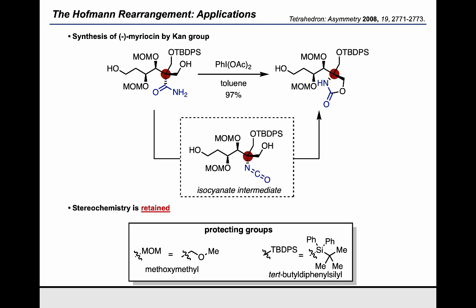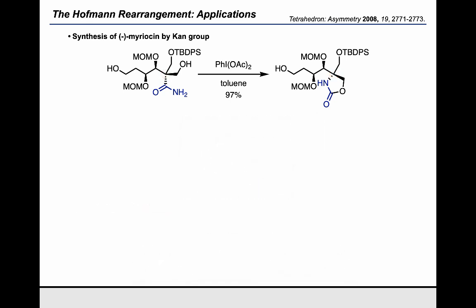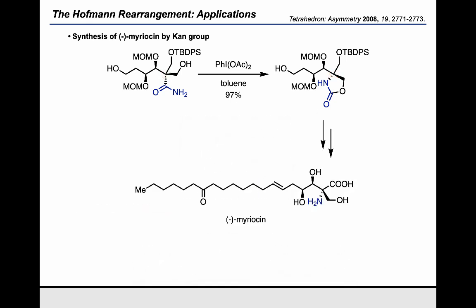The stereochemistry was once again preserved, and they were able to use that stereocenter in the intermediate they obtained, which they carried on to the final target meriosin. That stereochemical array was only accessible with the help of the Hoffman rearrangement.